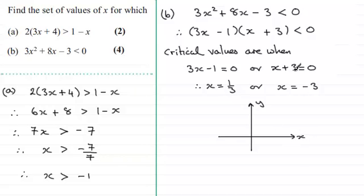And these critical values would be where the curve, this curve here, would cross the x axis. It would cross at minus 3, let's say that's there, and at 1 third.